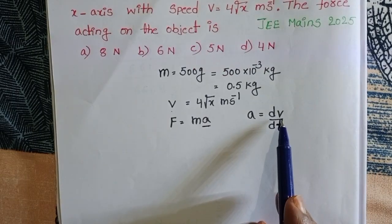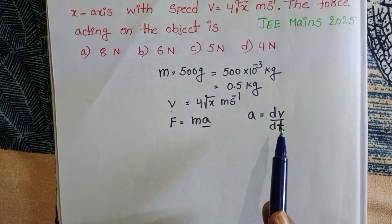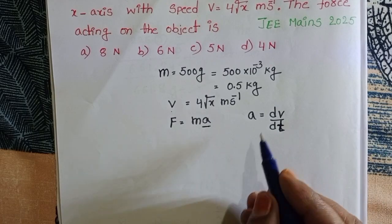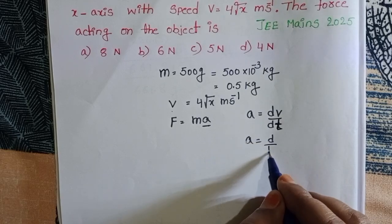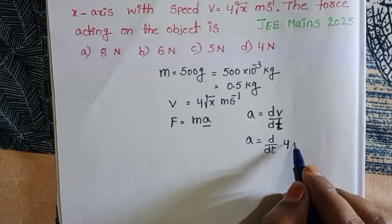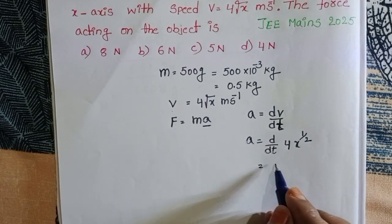The rate of change of velocity is called acceleration: a equals dv/dt. So, differentiate velocity with respect to time. a equals d/dt of 4 times square root of x. Write x to the power 1/2. 4 is constant.